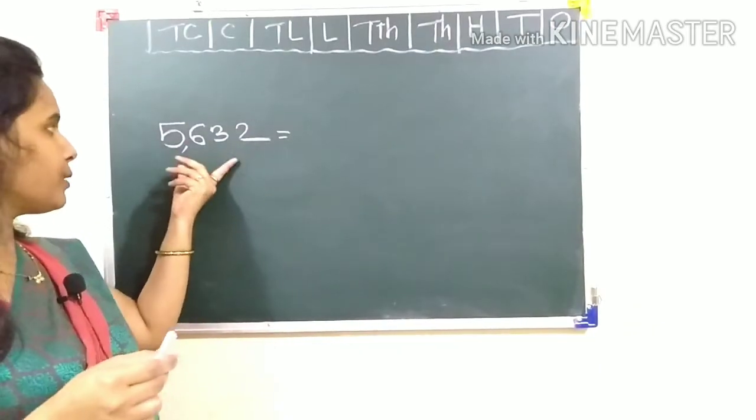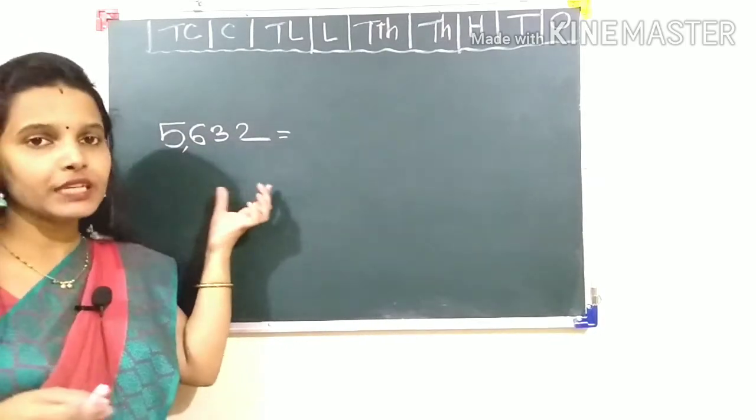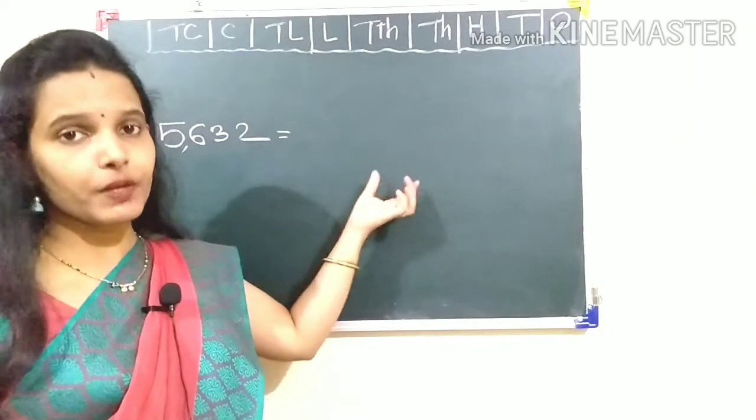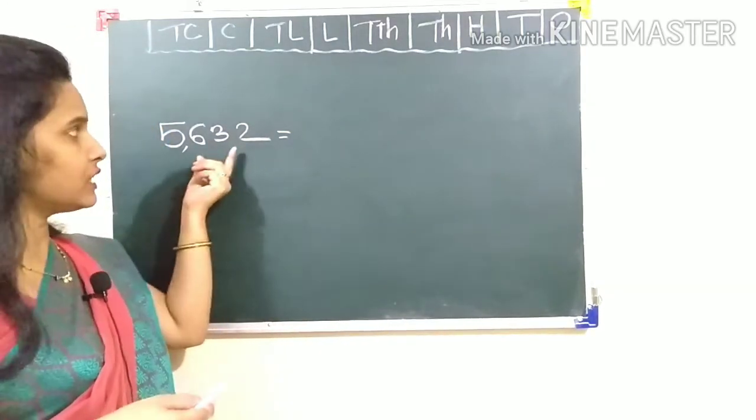So friends, here is our number 5632. And I have to write this number in expanded form or you can say expanded notation. But for this, you should know place value of each digit.